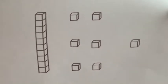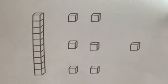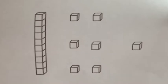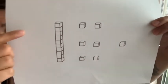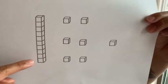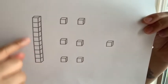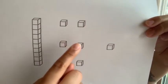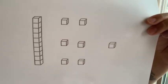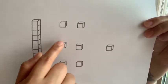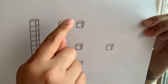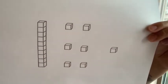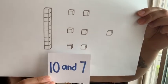Our next model is our 10-stick and some more 1-cubes. We're trying to figure out what number matches this quantity. Remember that good mathematicians look for groups of 10s and groups of 1s. I see a 10-stick here — I know right away that a 10-stick is the same as 10 cubes or 10 ones. So here is a group of 10 and some more ones. I can count my ones by 1s: 1, 2, 3, 4, 5, 6, 7. Or I can see them in groups — a group of 2, a group of 2, and a group of 2 — and count by 2s: 2, 4, 6, and 1 more is 7. So I have 7 more ones and a group of 10. In the say 10 way, it would sound like 10 and 7.